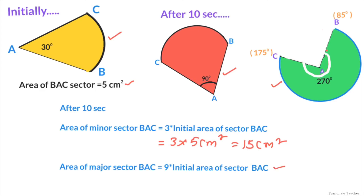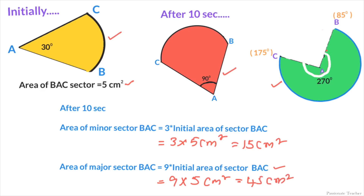The major sector BAC can be given as 9 times the initial sector BAC. That equals 9 × 5 cm², which gives us 45 cm². So the minor sector area is 15 cm² and the area of the major sector is 45 cm². Both answers are correct for this problem.